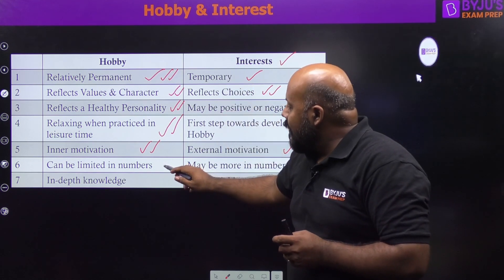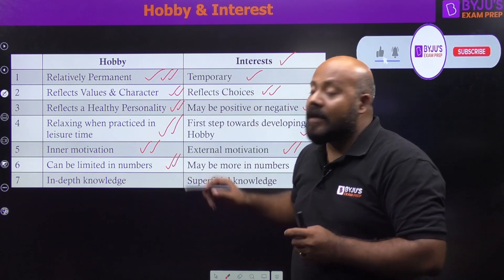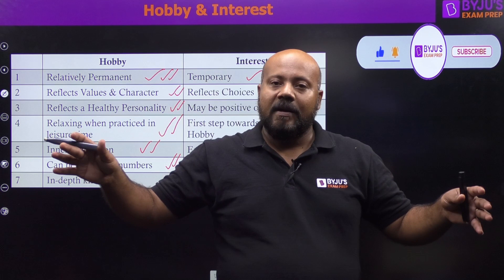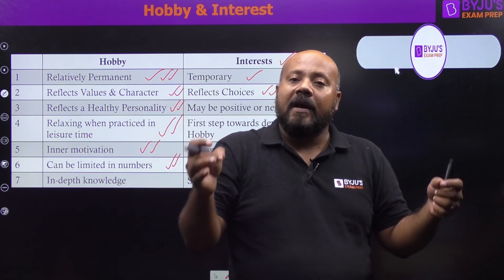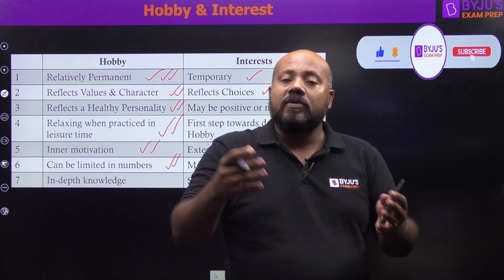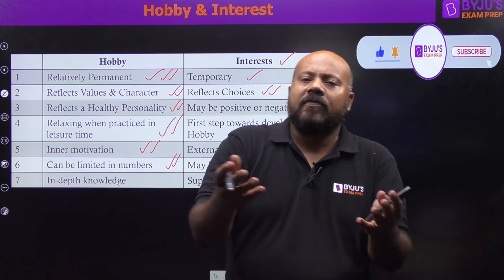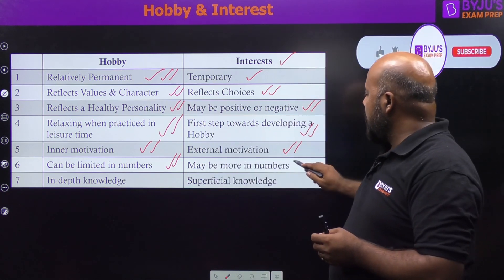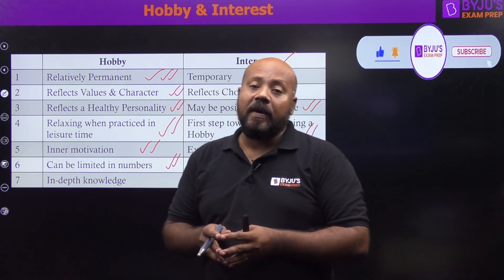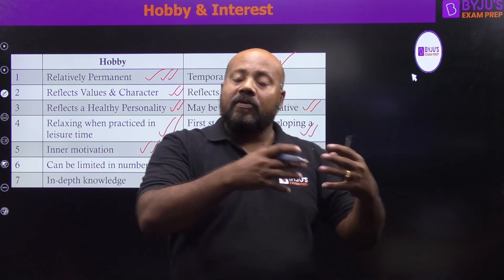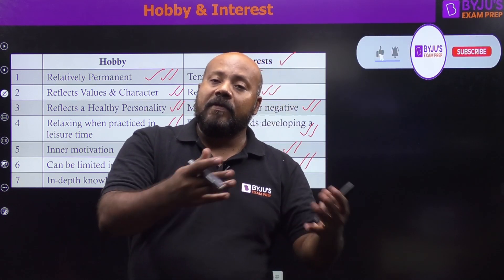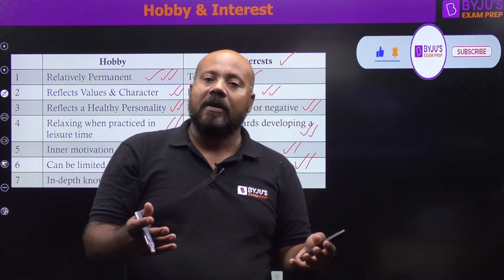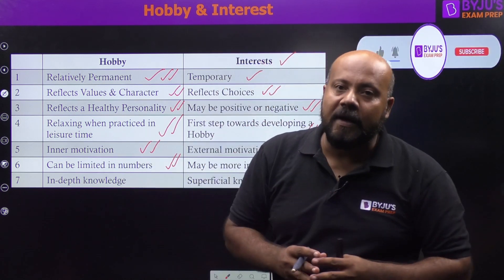Hobby is limited in numbers — you cannot have 100 hobbies. A healthy personality can have at most 3, 4, or 5 hobbies. But interests are going to be very high in numbers; you may have more than 10, 20, 30, or 50 interests in your life. Hobbies are going to be very limited.